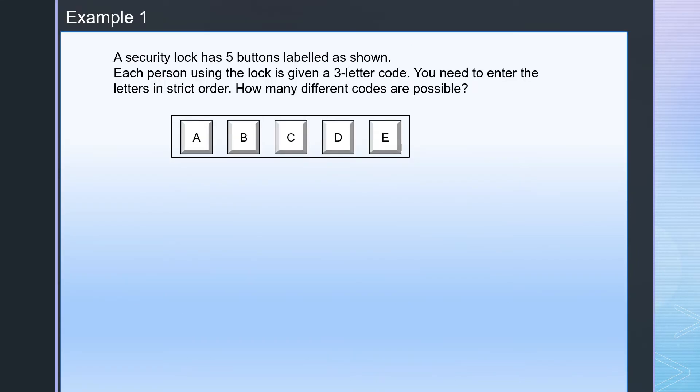A security lock has 5 buttons labeled as shown. Each person using the lock is given a 3-letter code. You need to enter the letters in strict order. How many different codes are possible?